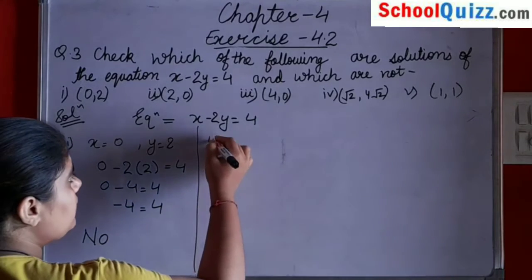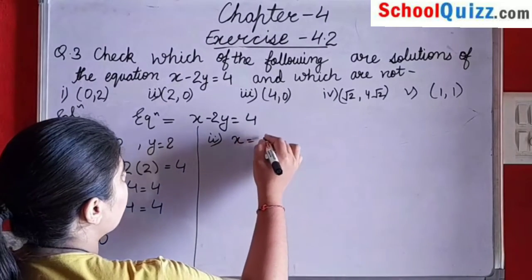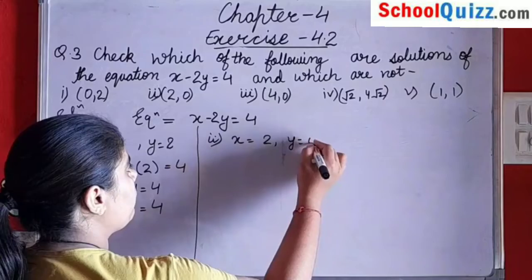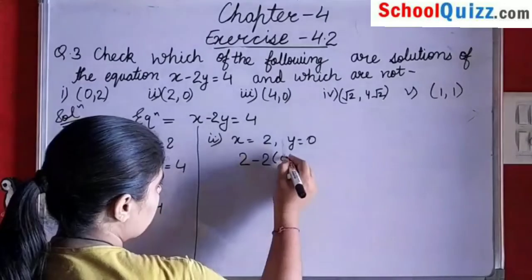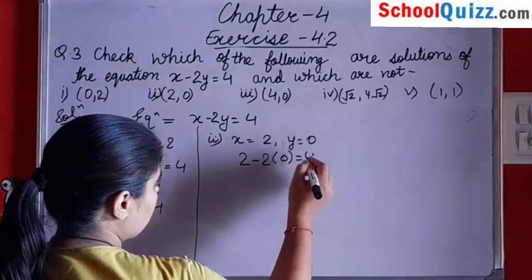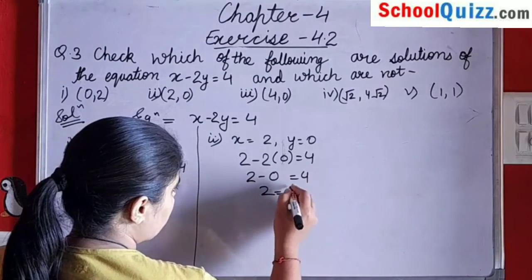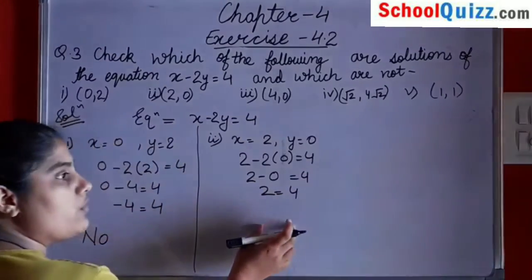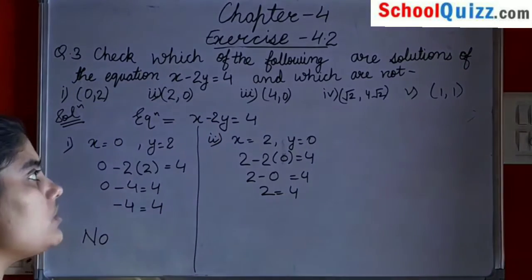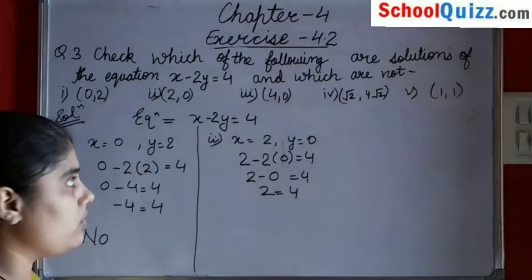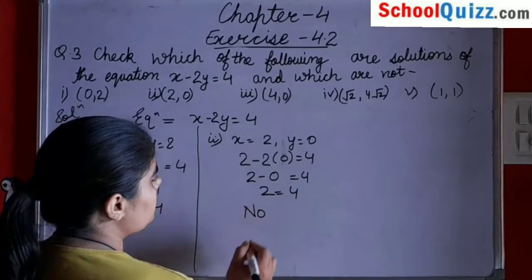Similarly, checking for the second point. In the second point, x given is 2 and y is 0. Putting x equals to 2 and y equals to 0, we get 2 minus 0 equals to 4, that means 2 equals to 4. These are not equal, so (2, 0) is also not a solution of x minus 2y equals to 4. Its answer is also no.